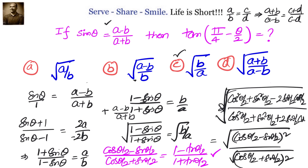So we can solve this from right-hand side to left-hand side, or from left-hand side to right-hand side. The conclusion is: if sin θ equals (a minus b)/(a plus b), then tan(π/4 minus θ/2) equals √(b/a).